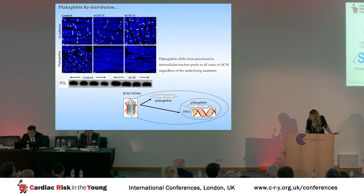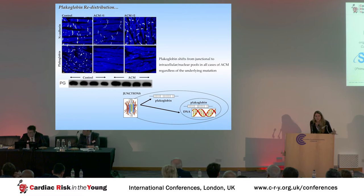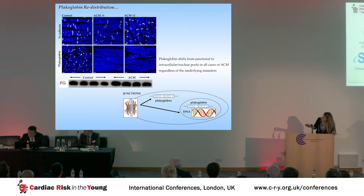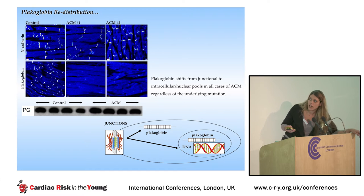We started over 10 years ago, and the first thing we observed is that plakoglobin seems to be gone from the intercalated discs in heart samples from patients with arrhythmogenic cardiomyopathy, regardless of the underlying pathogenic mutation. It does not matter if the patient has a mutation in plakoglobin, desmoplakin, desmocollin-2, or in no gene we could identify - plakoglobin does not make it to the junctions. However, it does not get degraded. It remains in the heart but is translocating from the membrane to the inside of the cell, to the cytoplasm or to the nucleus.